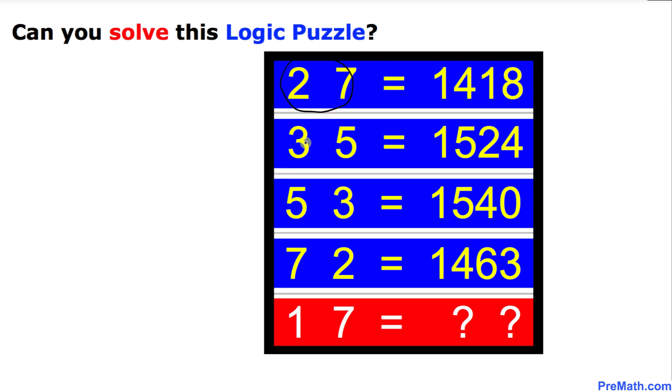35, 53, 72, and our answers are four digits long. The question is: what answer will we get if we have 17?